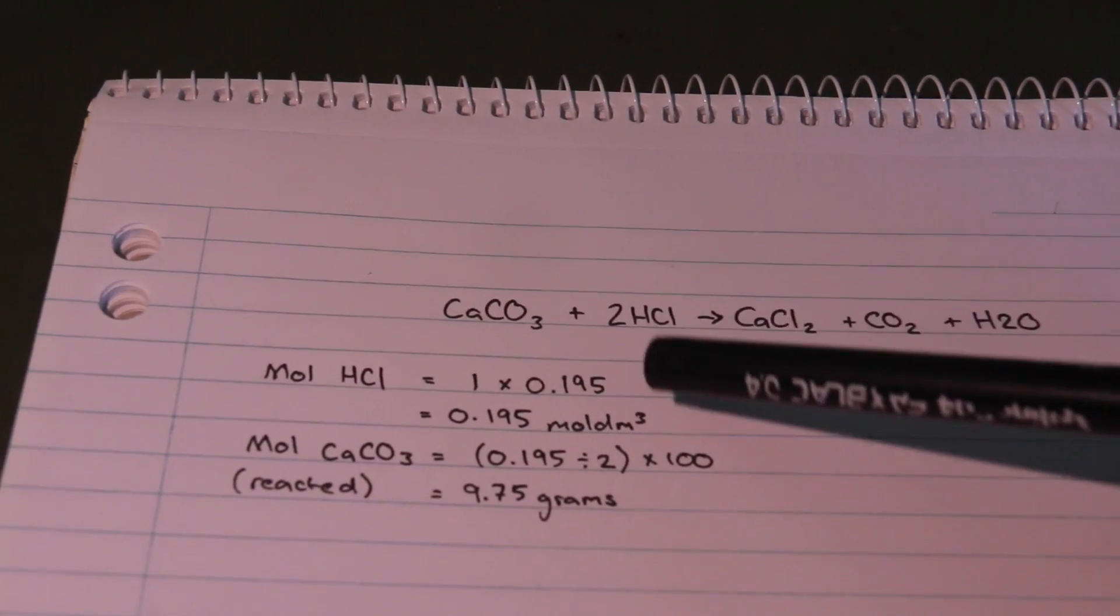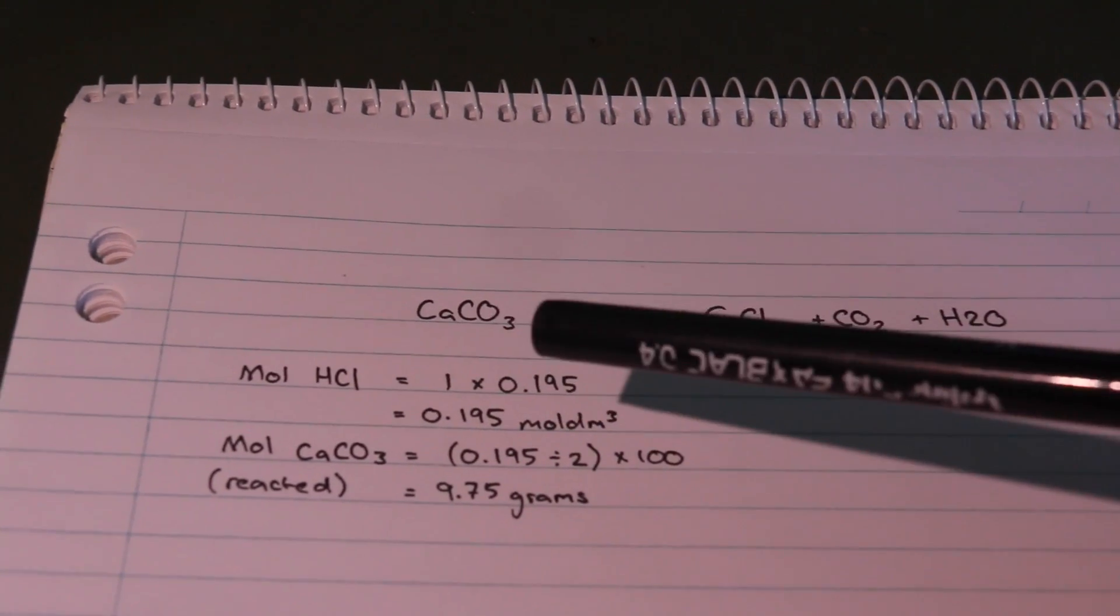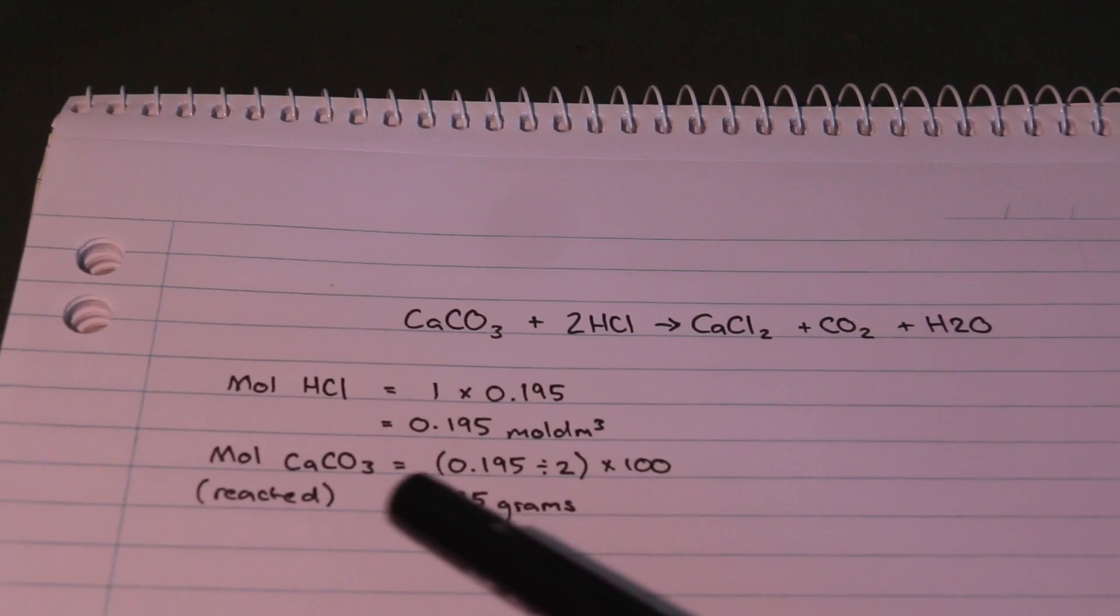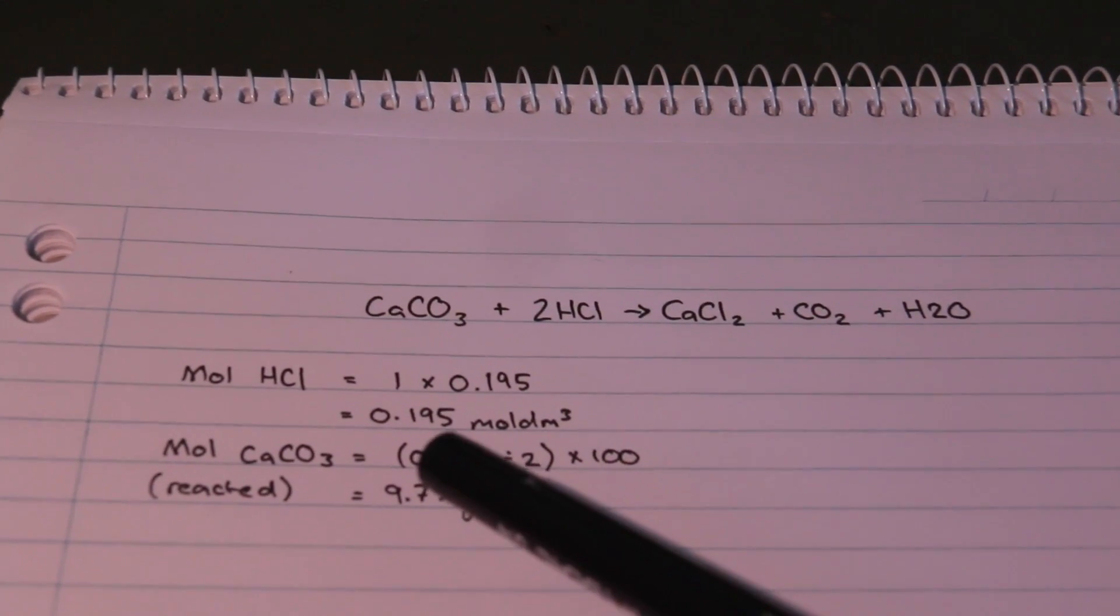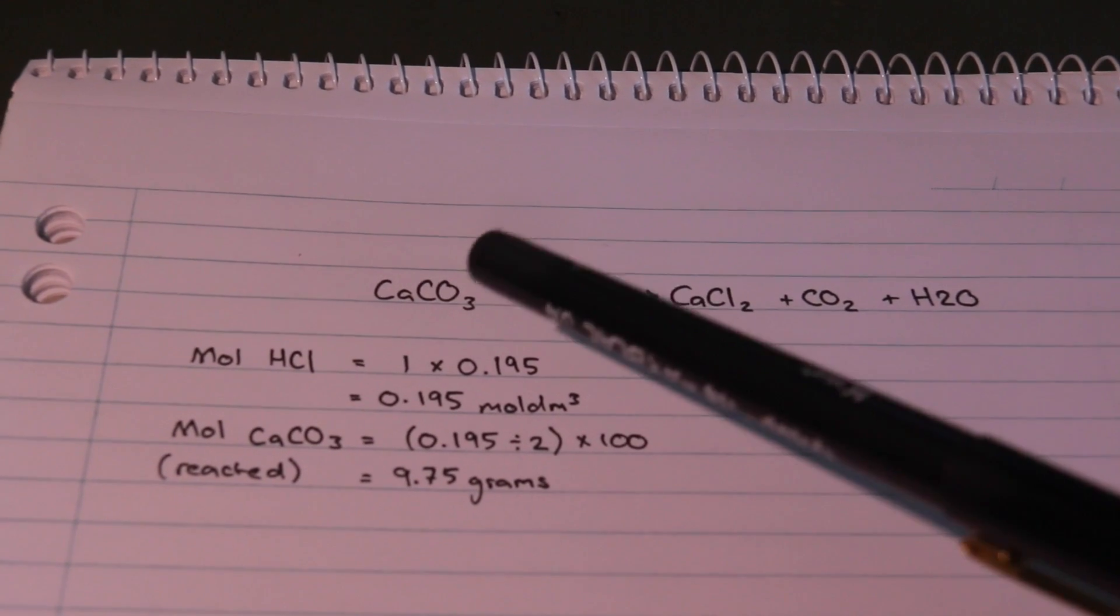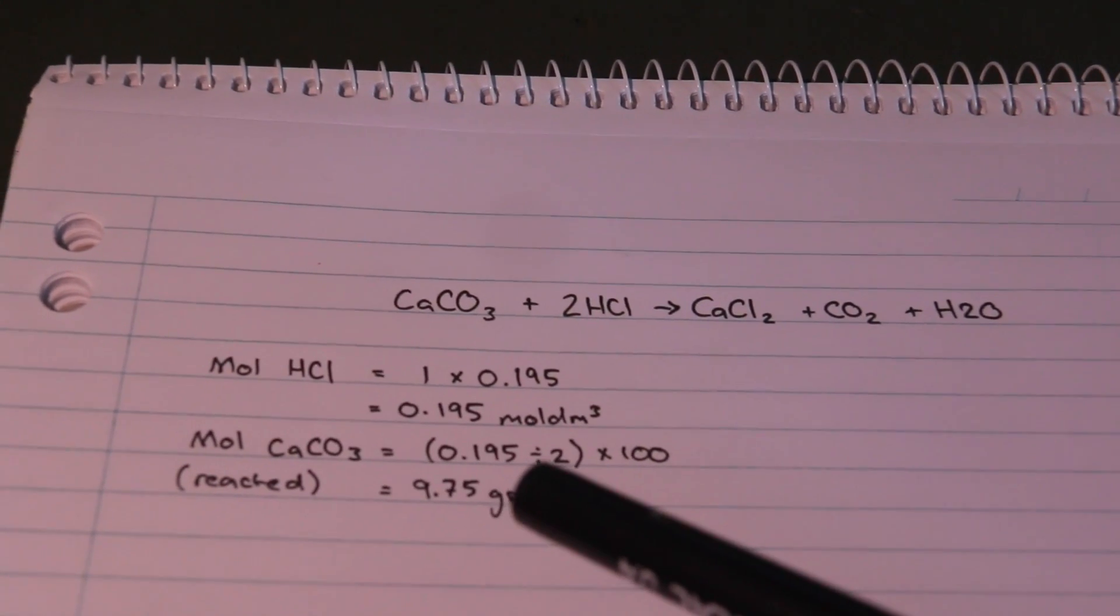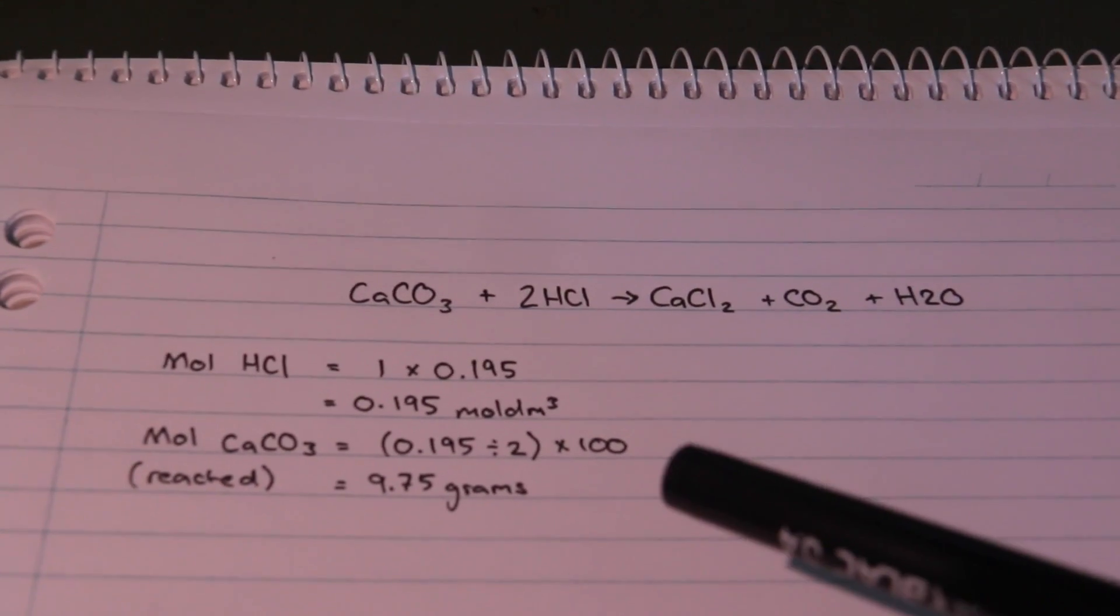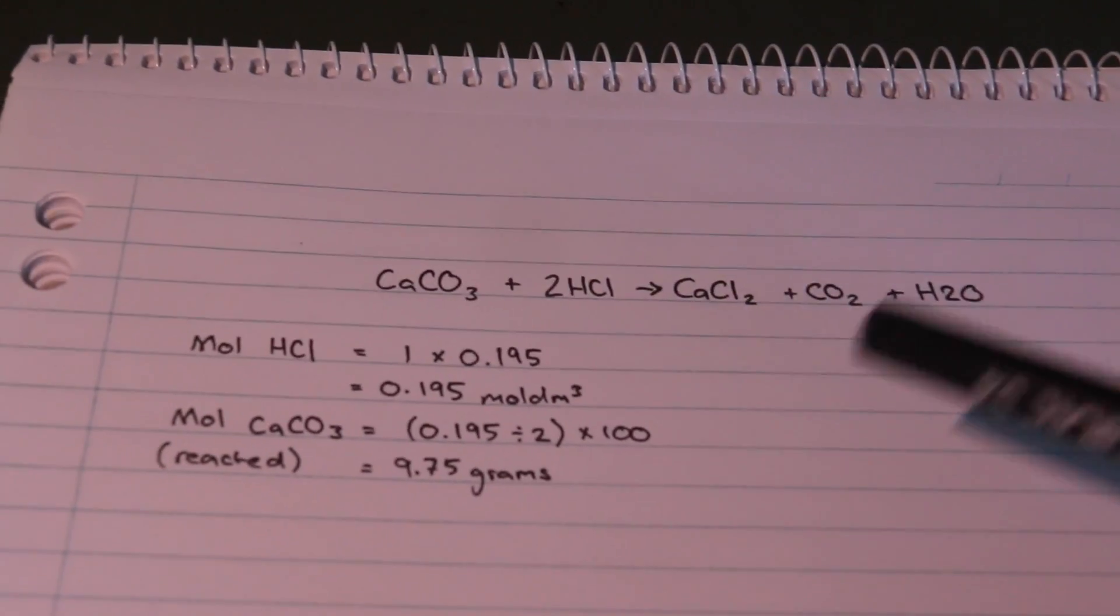The moles of hydrochloric acid that we had in using this acid was 0.195 moles, and the amount of calcium carbonate that we are able to dissolve is equal to that divided by two because the reaction ratio is one to two. So it's 0.195 moles divided by two multiplied by 100, which is the molar mass of calcium carbonate. So the result was 9.75 grams.